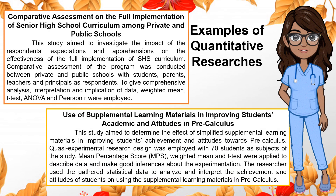The second quantitative example is Use of Supplemental Learning Materials in Improving Students' Academic Achievement and Attitudes in Pre-Calculus. This study aimed to determine the effect of simplified supplemental learning materials in improving students' achievement and attitudes towards pre-calculus. Quasi-experimental research design was employed with 70 students as subjects. Mean Percentage Score (MPS), weighted mean, and t-test were applied to describe data and make inferences. The researcher used the gathered statistical data to analyze and interpret the achievement and attitudes of students on using the supplemental learning materials.